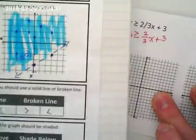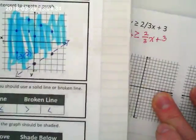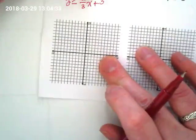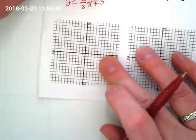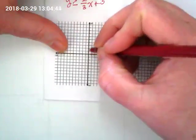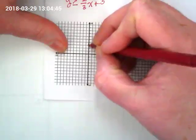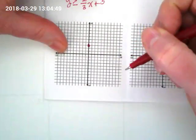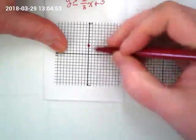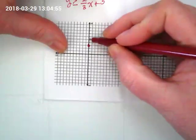Where do we start graphing? Positive three on the y-axis: one, two, three. What is our slope? So we're going to rise up two and run across three.